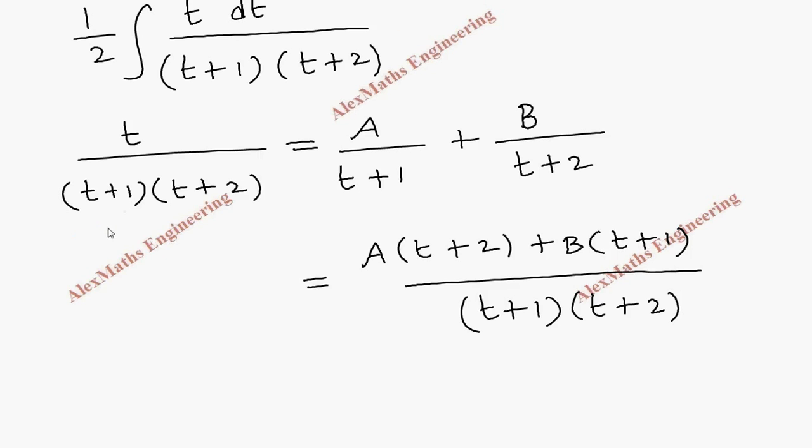Since both the denominators are same, we are going to equate the numerators on both the sides. So here the numerator is t and here a into t plus 2 plus b into t plus 1.